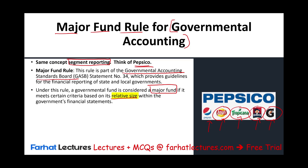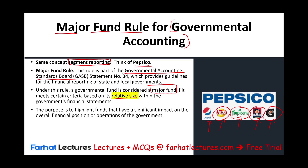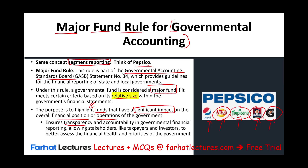So how do we know a fund is a major fund and will need to be reported separately? We look at its relative size relative to other funds. The purpose of this is to make sure funds that have significant impact — large enough to affect the overall financial position and operations of the government — are highlighted. We want to show those separately to ensure transparency and accountability in government financial reporting.